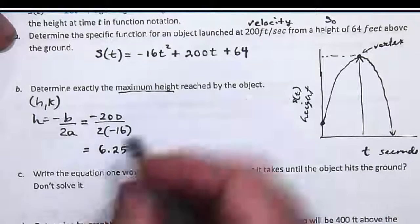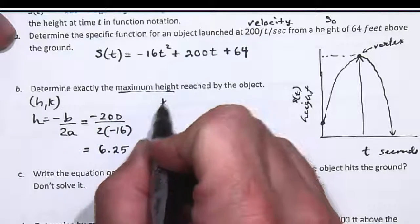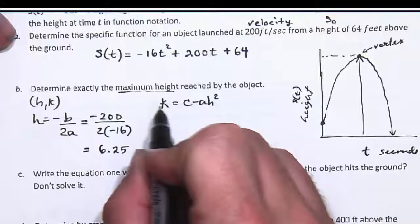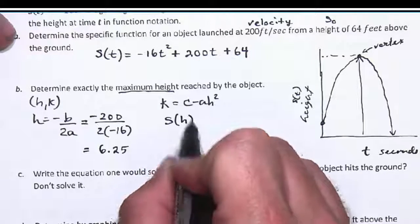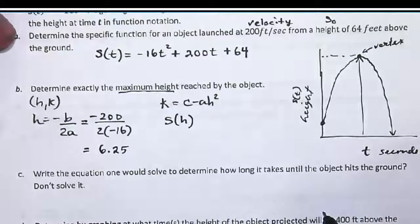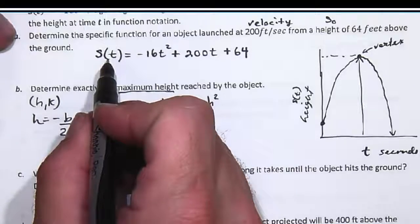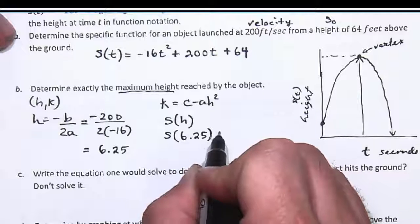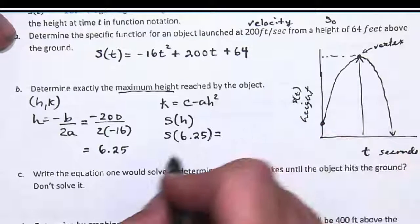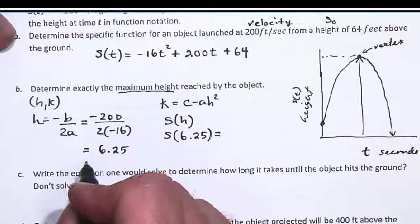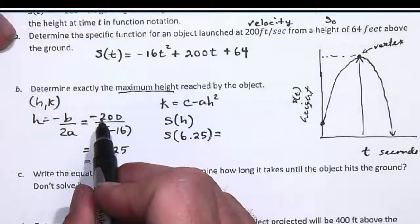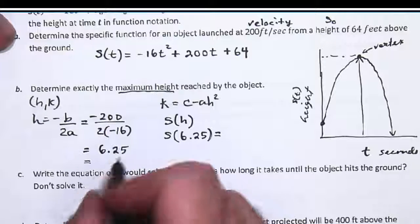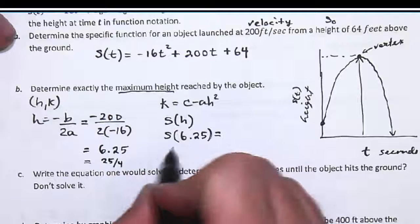Once you know that, you can find k by either using the formula k equals c minus b²/4a, or you can also do k equals s of the value you got for h. If you plug this into this formula, you get the same thing. So I'll do that one because it seems a little easier. Let me write this a different way as a fraction. This was 100 over 16, which is 50 over 8, which is 25 over 4. So this is 25 fourths.